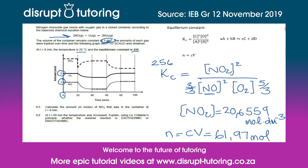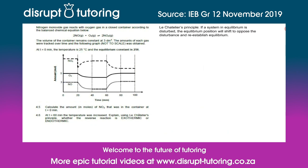The next question tells us that at 60 minutes the temperature was increased, and we are asked to use Le Chatelier's principle to explain whether the reverse reaction is exothermic or endothermic. Le Chatelier's principle states that if a system in equilibrium is disturbed, the equilibrium position will shift to oppose the disturbance and re-establish equilibrium. From the graph, the disturbance at 60 minutes increases the concentration of the reactants and decreases the concentration of the product, meaning the reverse reaction is favored.